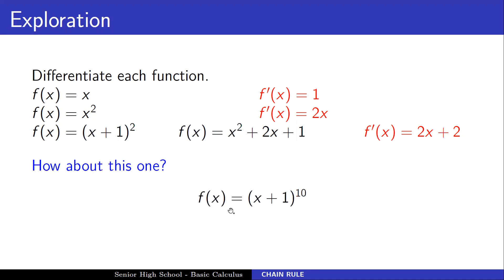How about f(x) = (x + 1)^10? We could use the previous rules, but we need to expand it. Since the exponent is 10, it's very tedious to expand this expression. Therefore, we need another rule to facilitate finding the derivative — and that rule is called the chain rule.